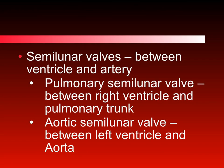The other two valves are called the semilunar valves. They are found between the ventricle and the artery they are named after. The pulmonary semilunar valve is between the right ventricle and the pulmonary trunk. The aortic semilunar valve is between the left ventricle and the aorta. The function of the semilunar valves is to prevent blood from re-entering the ventricle once it has left into the blood vessel. The pulmonary semilunar valve prevents blood from re-entering the right ventricle from the pulmonary trunk, and the aortic semilunar valve prevents blood from flowing from the aorta back into the left ventricle.